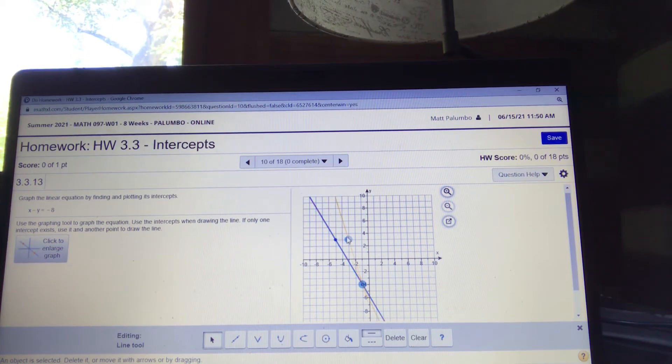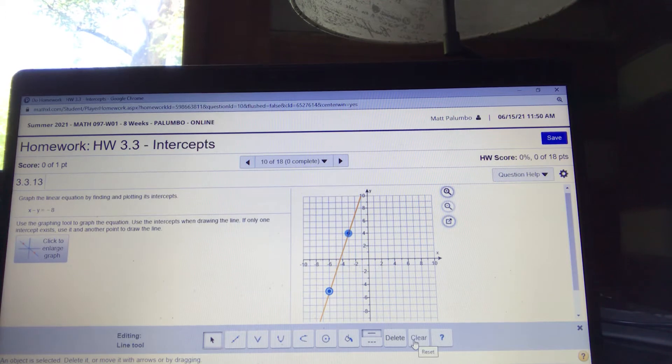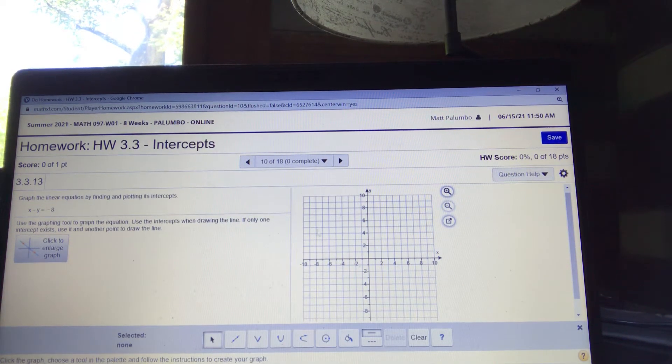Now, you can also, if you make a mistake, you can drag the points around to where you need it to be. Okay. And if you make a big mistake and you want to just start over, you can hit clear. You sure you want to clear it? Yes. Okay. And now I have my blank graph again.